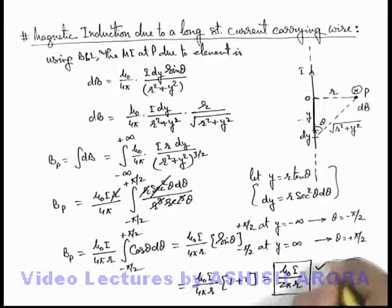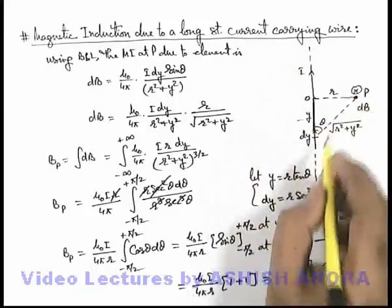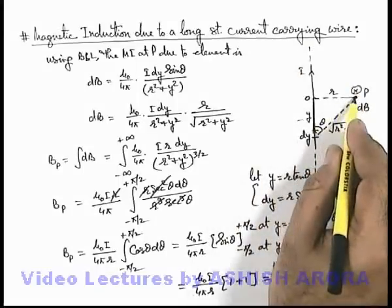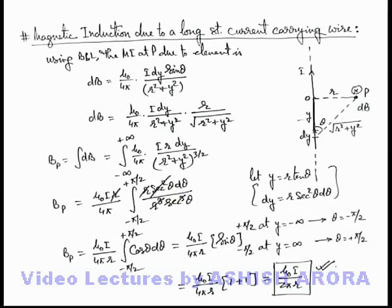The result obtained is B = μ₀·i / (2π·r), which is a very useful result for the magnetic induction due to a straight wire at point P, obtained mathematically by using Biot-Savart's law.